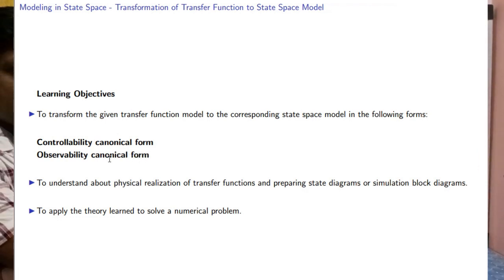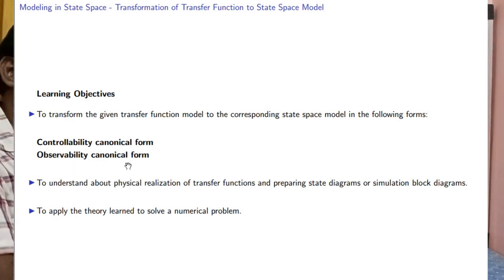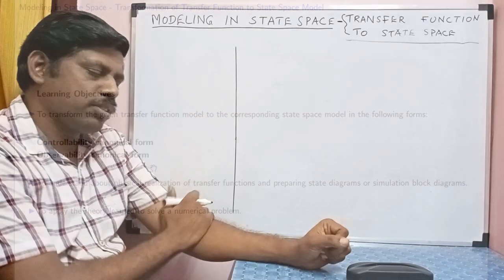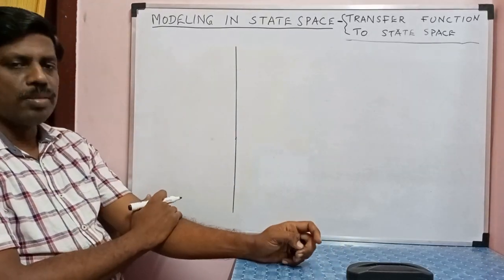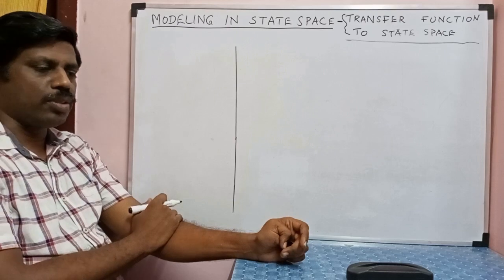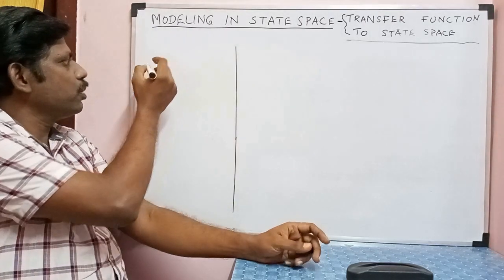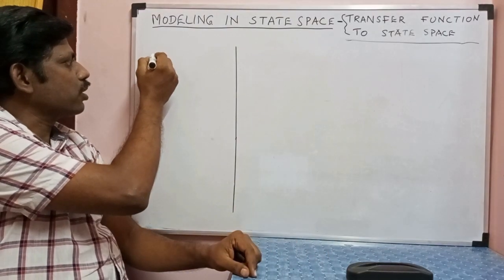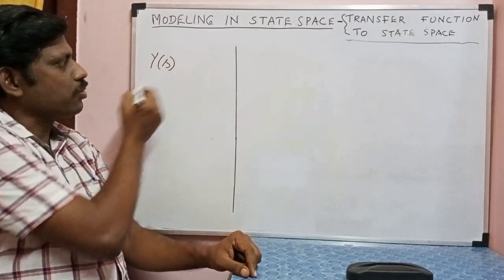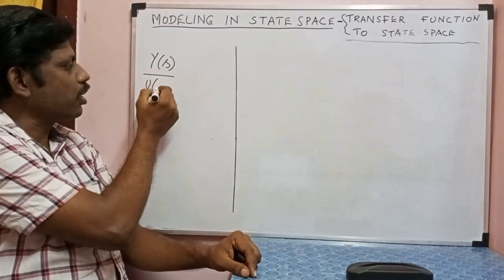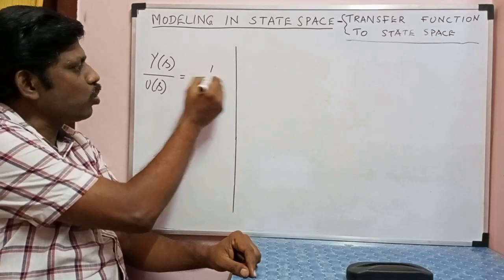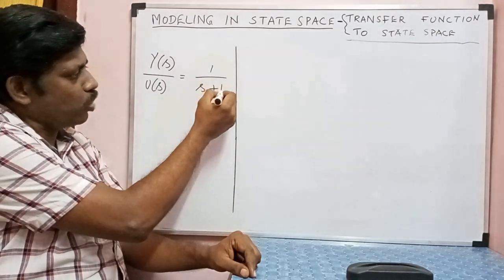With this background, we move on to today's topic. The learning objective for this lecture is to transform a given transfer function model to its corresponding state space model. We will focus on the controllability canonical form and the observability canonical form. Let me take a simple example to understand the methodology.